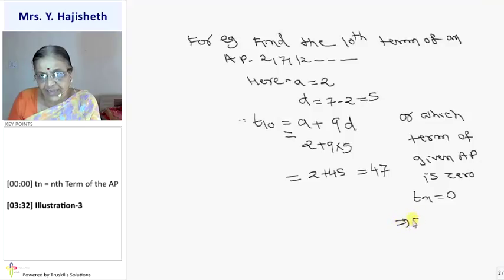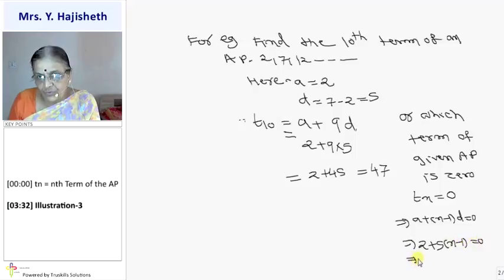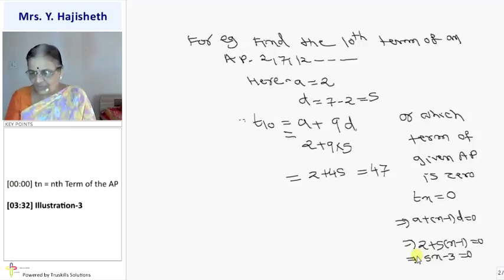Tn with 0. Tn ki jagah hum likhenge A plus N minus 1 D equals 0. Toh hum A ki jagah likhenge 2 plus 5 times N minus 1 is 0. Toh kya aayega? 2 minus 5, toh minus 3. 5N minus 3 is 0. Dekho, N toh fraction mein aaya. N is 3 by 5, it is not possible.